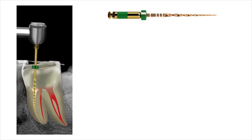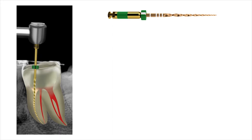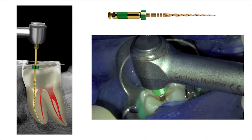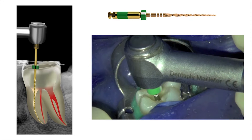A size medium Wave One Gold reciprocating file was selected for root canal preparation, taking into account the size of the root canals. The access cavity was filled with 3.5% sodium hypochlorite, and here you can see the preparation of the meso-buccal and mesiolingual root canals using the single Wave One Gold reciprocating instrument.